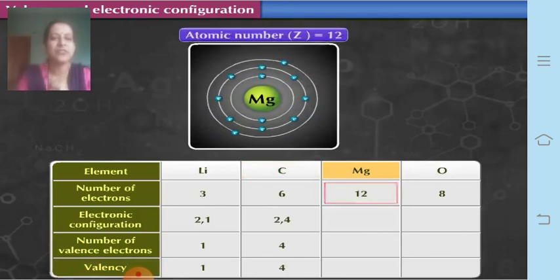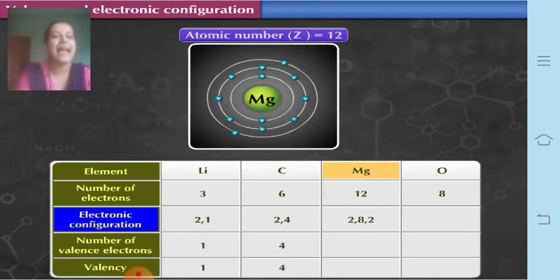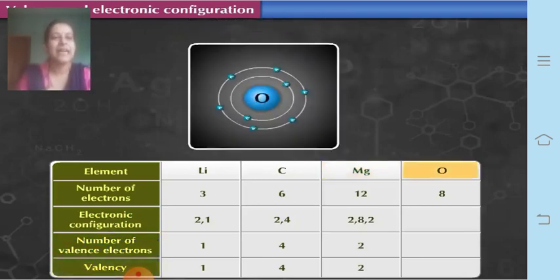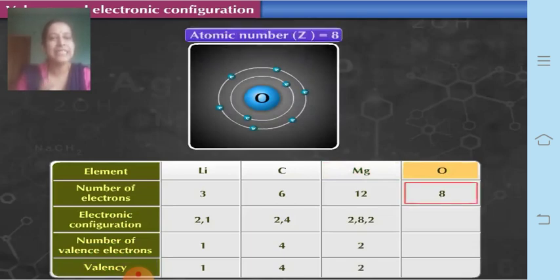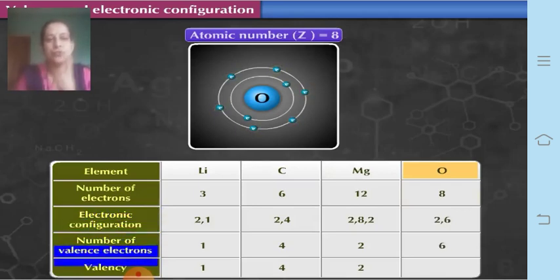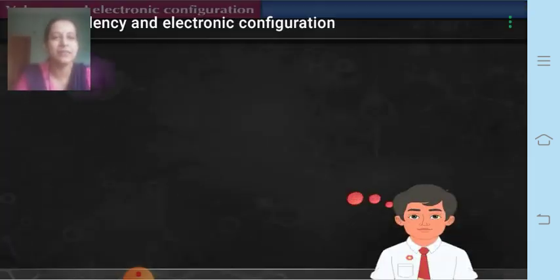Magnesium has atomic number 12, so the number of electrons is 12. Electronic configuration is 2, 8, 2. Number of valence electrons is 2 and valency is also 2. Oxygen has atomic number 8, so it has 8 electrons. Electronic configuration is 2, 6. It requires 2 electrons to complete its octet. Number of valence electrons is 6 and valency is 2.